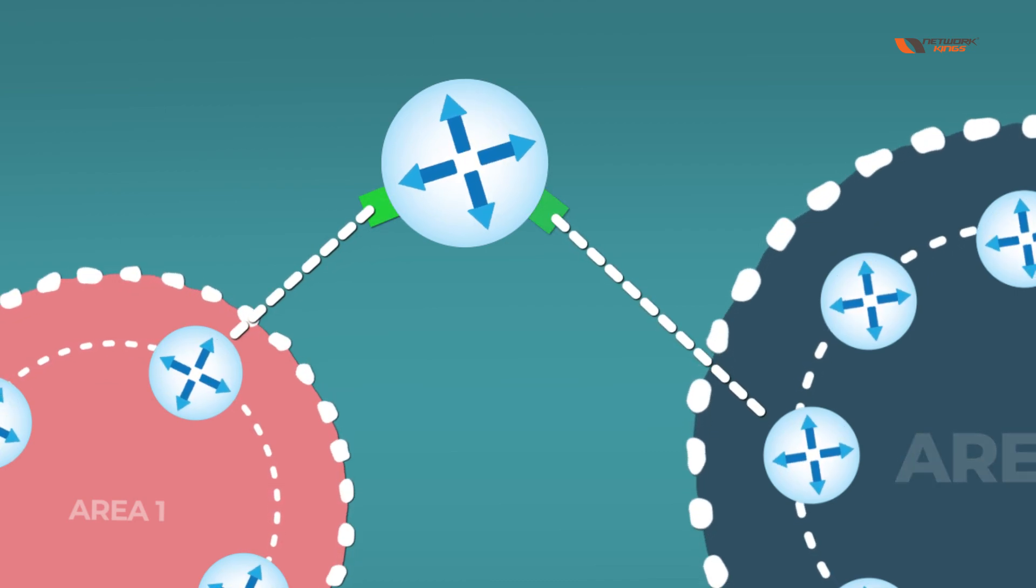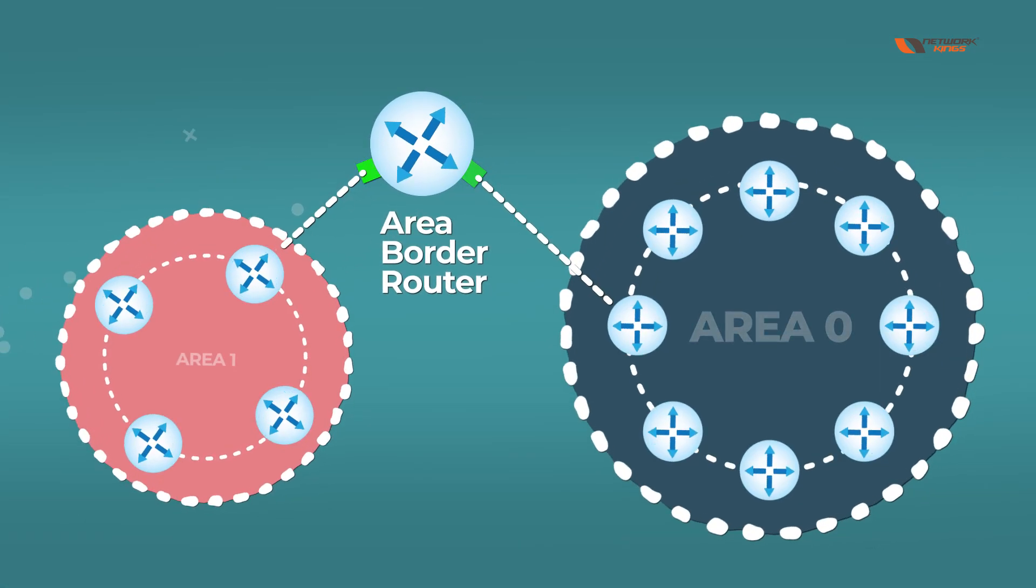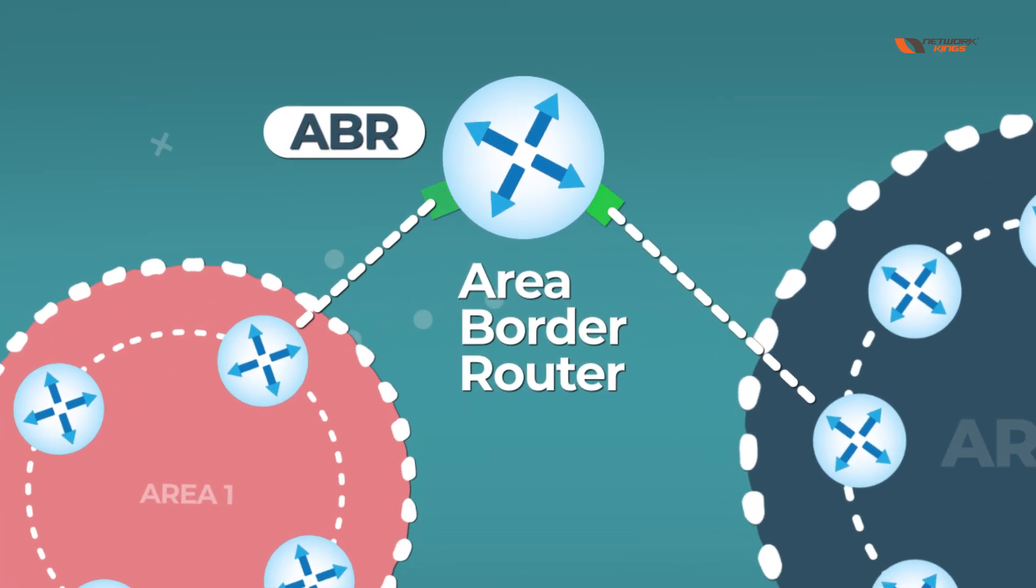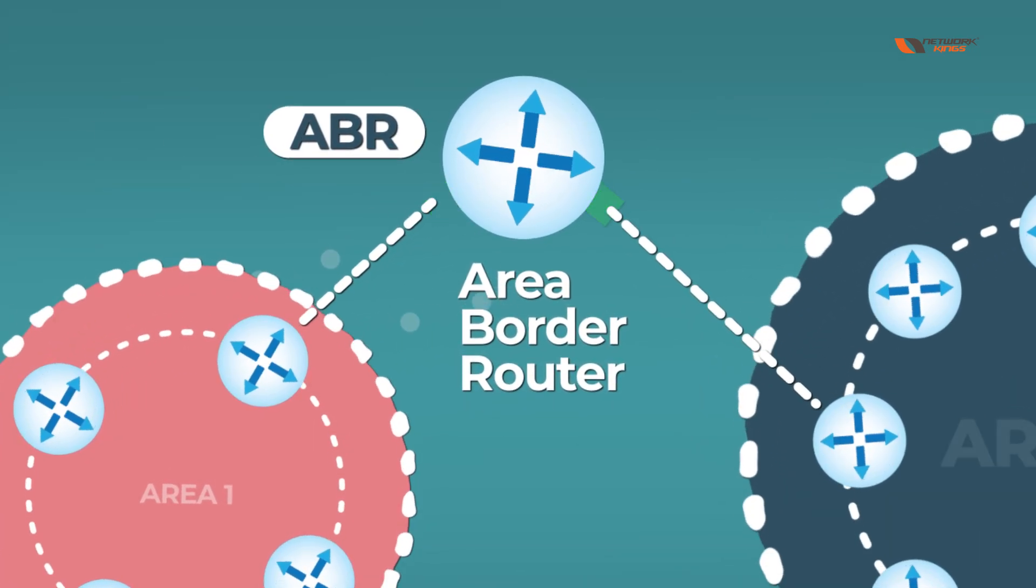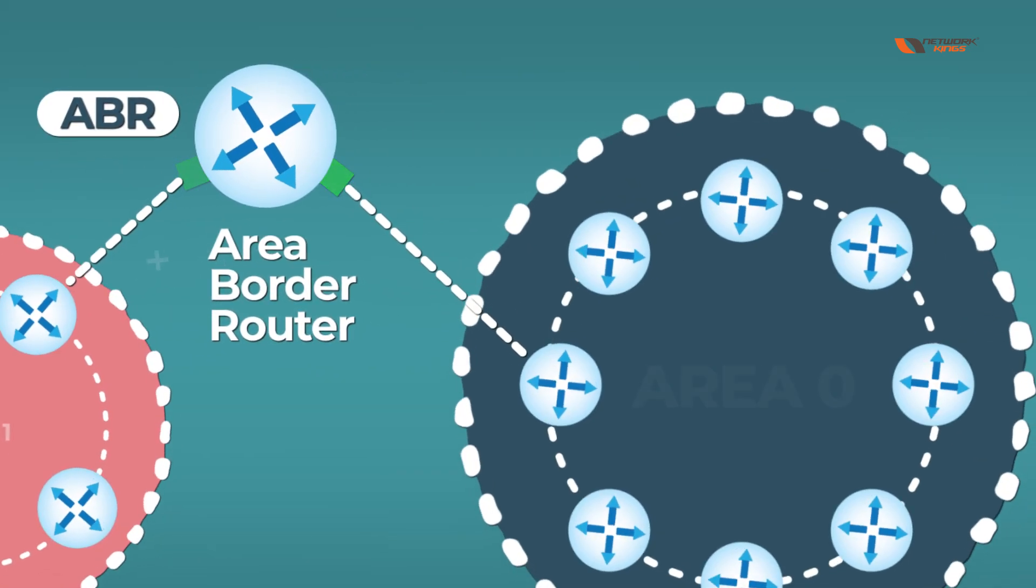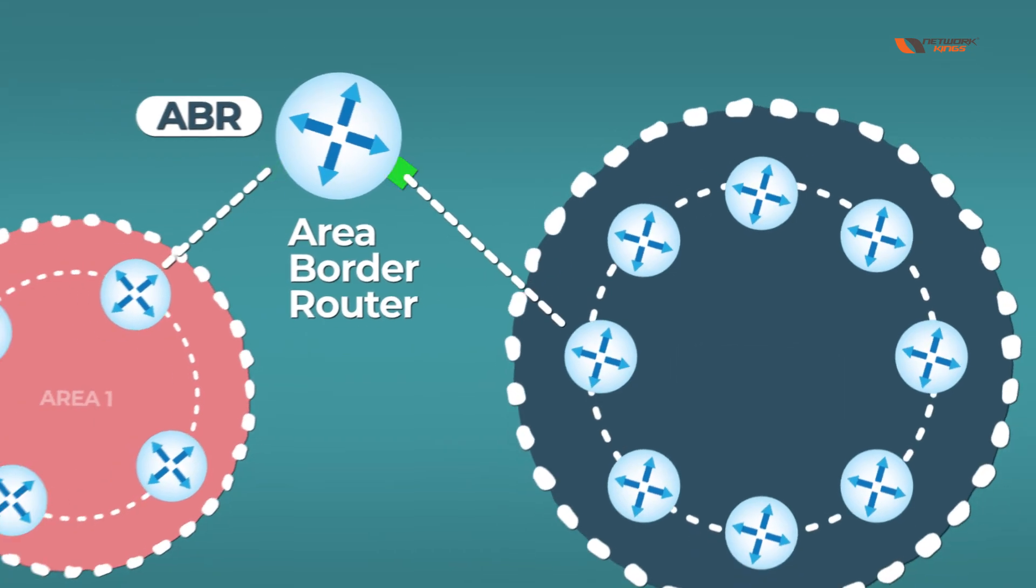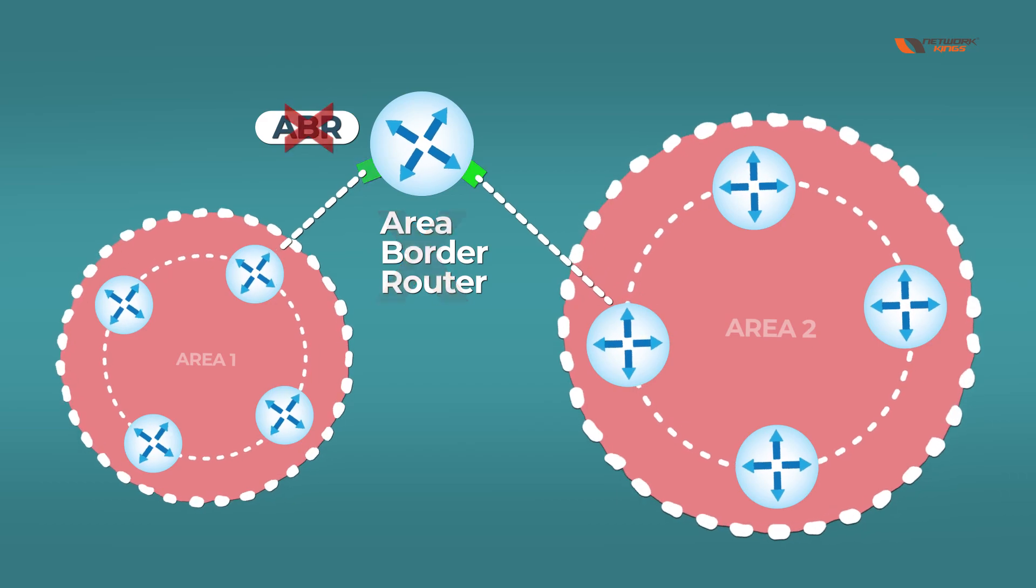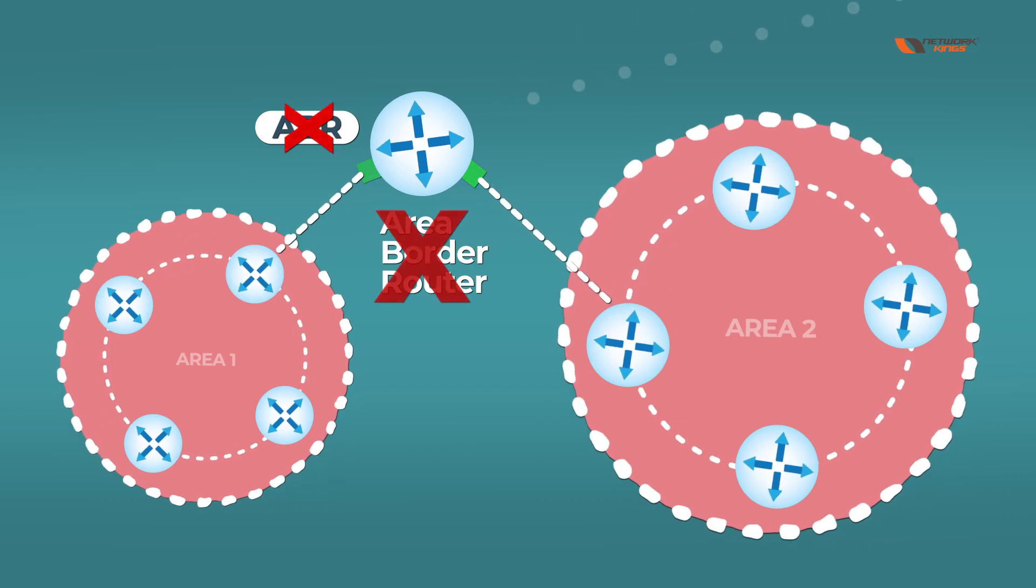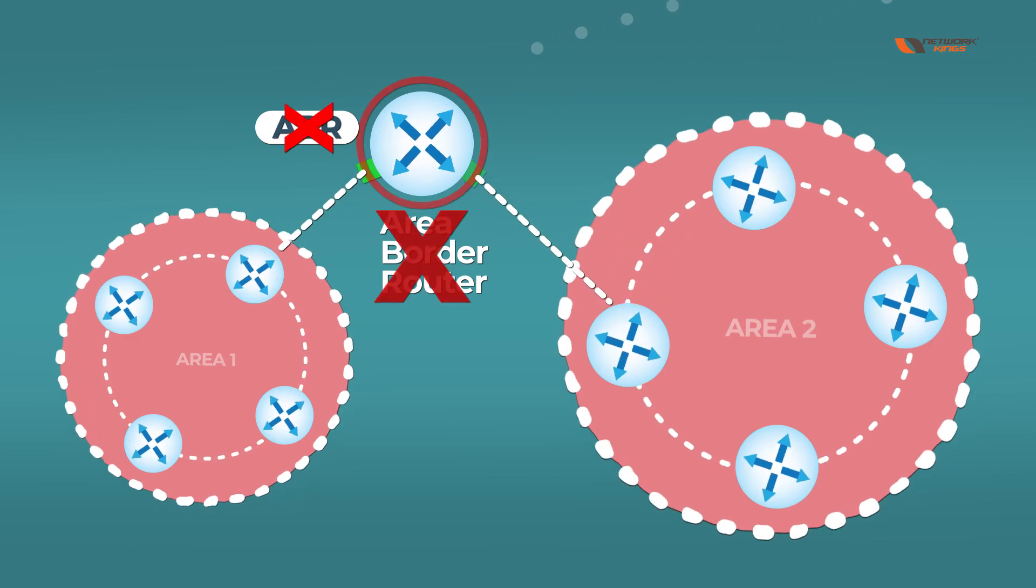In OSPF, we call this an Area Border Router. ABR stands for Area Border Router. Whenever we have any interface in Area 0, then only we will have an ABR. If you do not have Area 0, or if you have Area 1 and Area 2, according to OSPF design this is not an ABR.